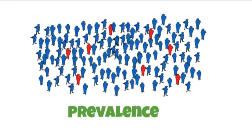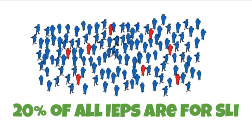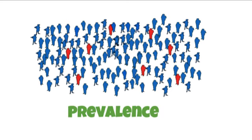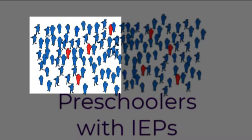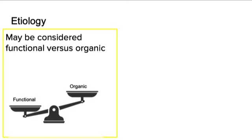Let's look at prevalence. Speech and language impairments are considered a high-incidence disability and often occur with other disabilities — the word we use to describe that is comorbid. Almost 20% of children who receive special education services receive those services for speech and language disorders, and preschoolers with speech and language disorders represent almost half of all preschoolers that receive special education. When we look at etiology — the cause or set of causes of a condition — speech and language impairments can be considered functional, also known as idiopathic, meaning the cause is unknown, or organic, meaning caused by some identifiable problem in the neuromuscular mechanism.